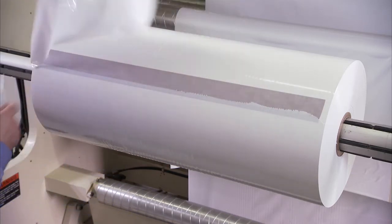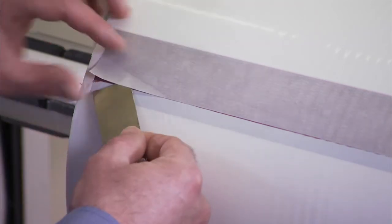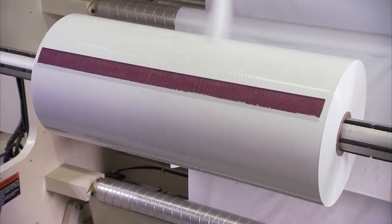To remove the upper liner, start about an inch in from the roll edge and from the center of the tape width, peel the upper liner off using an upward motion.